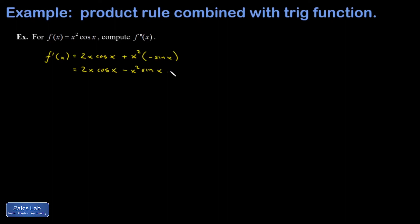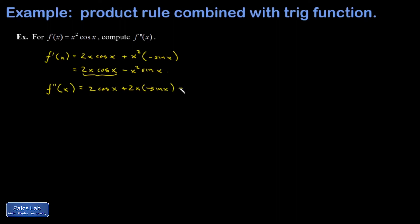Then f double prime, or the second derivative, just means differentiate again. But now I have two terms that are both products, so I'm going to have to use the product rule twice in this step. Out of the first term, I differentiate 2x and I get 2, leaving the second function alone, then add to that 2x left alone times the derivative of cosine. In my second term, I'm going to write a minus in front of what I get for differentiating x squared sine x — that gives 2x sine x plus x squared cosine x.